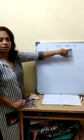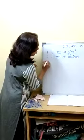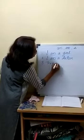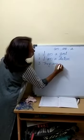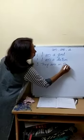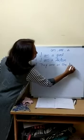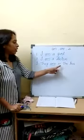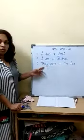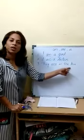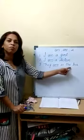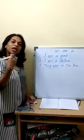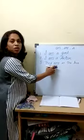Now we will see the examples for are — where we use are. They are in the bus. It means more than one person is there. When we talk about a large gathering, more than one person, that time we use are.